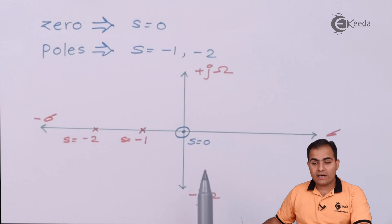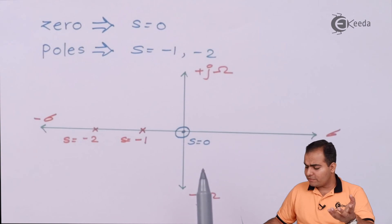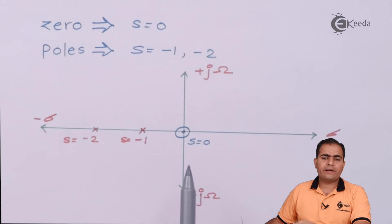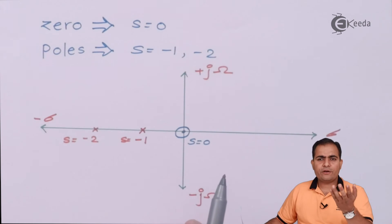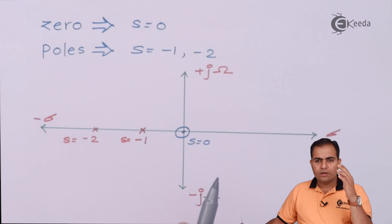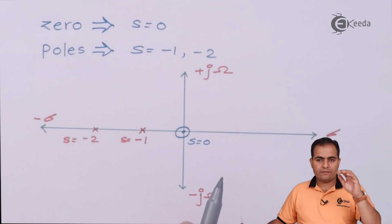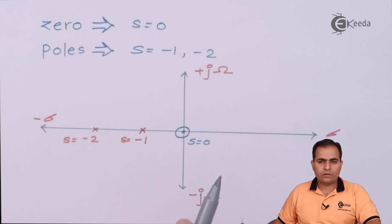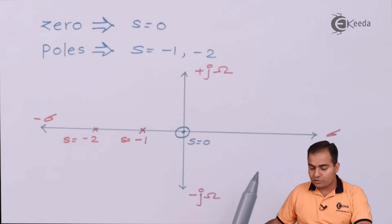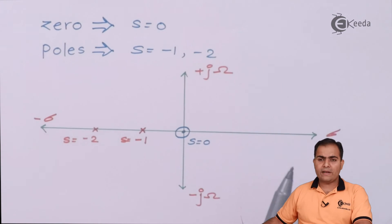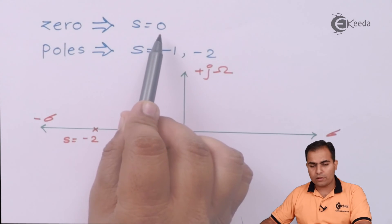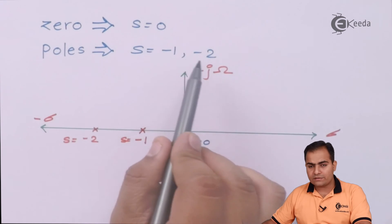Most of the time this type of question is asked for 5 marks. What is important is to find the roots of the numerator and denominator. Once you have the roots, equate each to zero to get the S values — these give you the zeros and poles respectively. Then draw the pole-zero plot in the S-domain and place the zeros and poles at their correct locations according to their polynomial values.